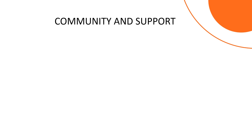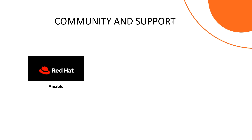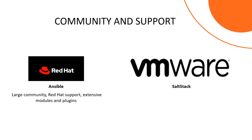Community and support can make a big difference, especially when you're troubleshooting or looking for new ways to optimize your automation workflows. Ansible, being part of Red Hat, has a very large community and strong enterprise support. There are countless modules and plugins developed by the community, making it highly extensible. SaltStack, now under VMware, also has a strong community — it's been around for a while and you'll find plenty of resources, but it might not be as extensive as Ansible's. However, if you're looking for a tool that offers more in-depth automation capabilities with real-time data processing, SaltStack is worth considering.